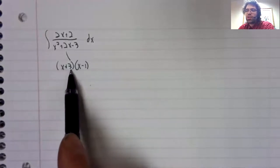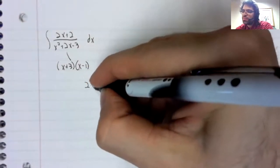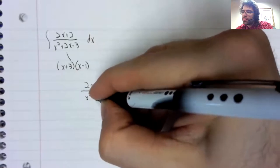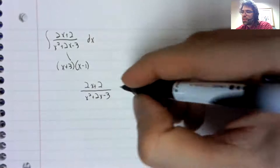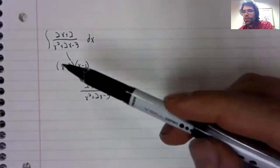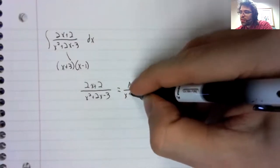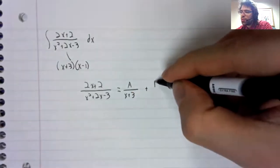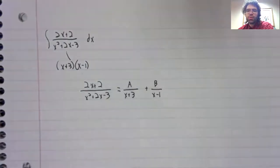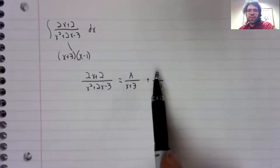So we factored the denominator. We have two linear terms. And the partial fraction decomposition is as follows. Each linear term will give us a rational expression with real numbers up there. Now we need to find A and B.